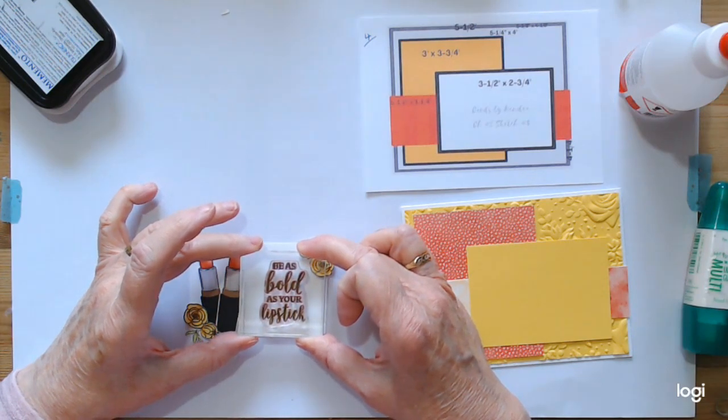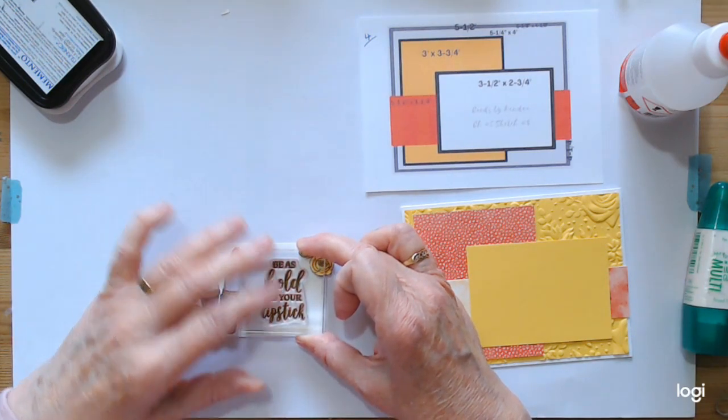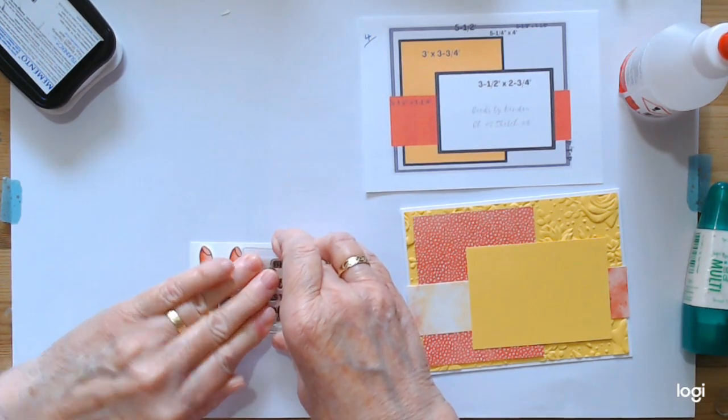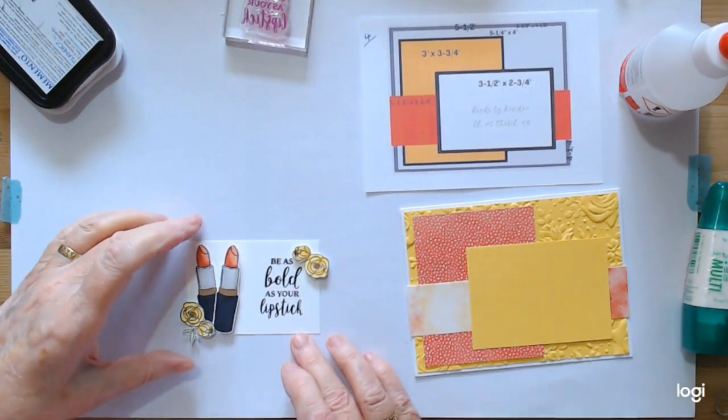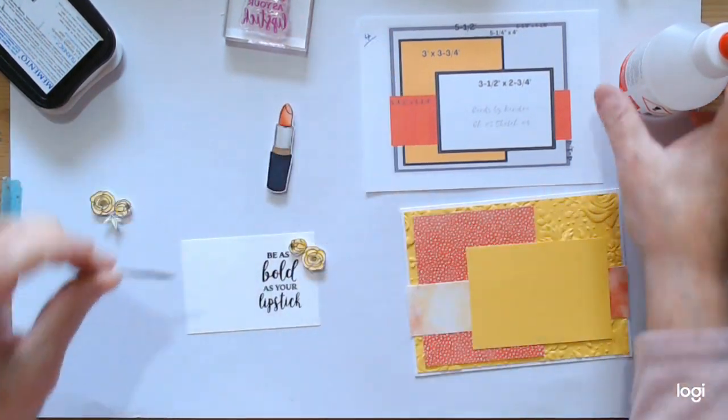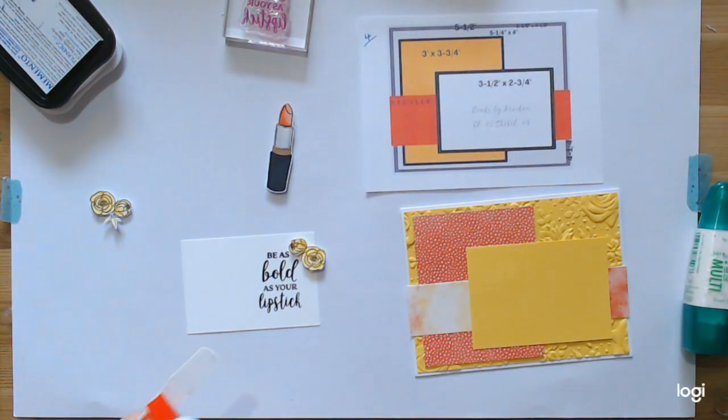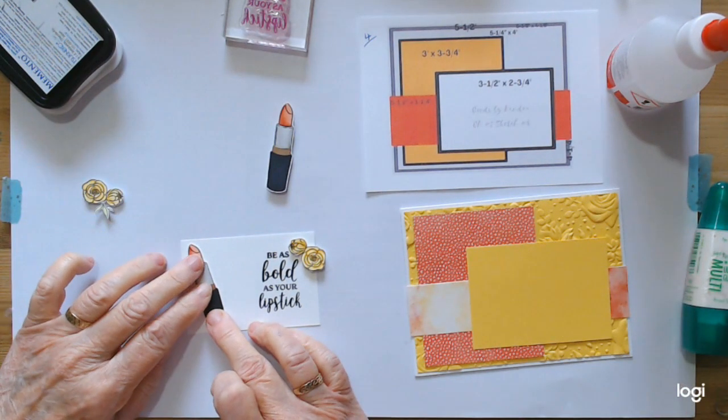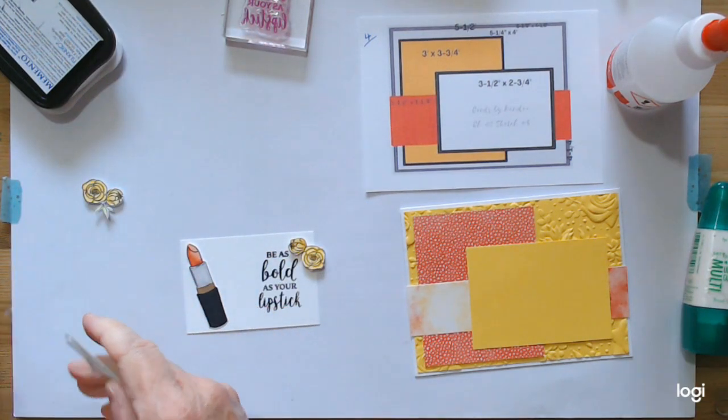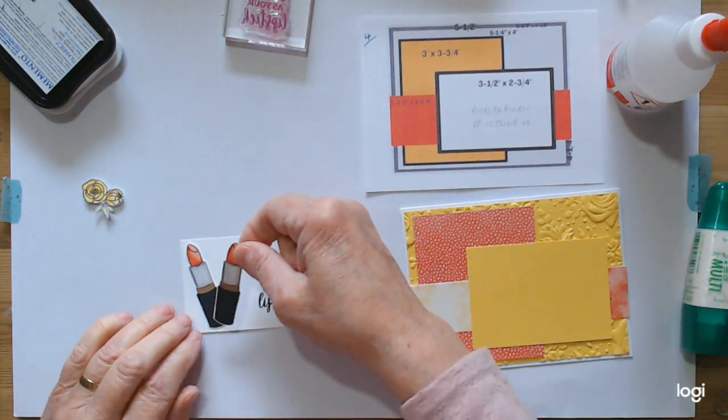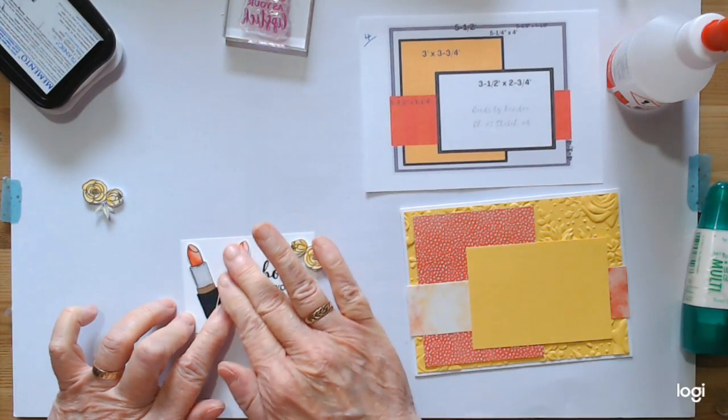So be as bold as your lipstick will sit about here, and then we'll add these things on. This one is going to go down flat at a wee jaunty angle. This one is layered up already with 3D foam and it'll sort of cover the top.